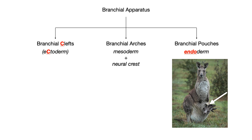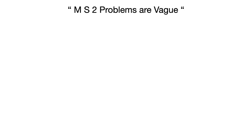I'm a big fan of one-sentence mnemonics where each word cues you about a different thing. The pharyngeal arches or branchial apparatus is vague and tough to study, and you have to study this during your second year of medical school when preparing for boards. So my mnemonic is: MS2 problems are vague. MS2 for second year of med school — because we really don't want to study all of this vague, generalized information.